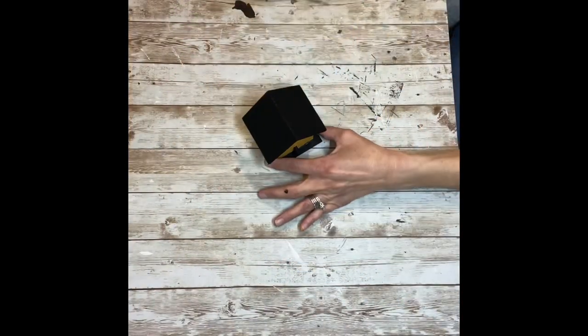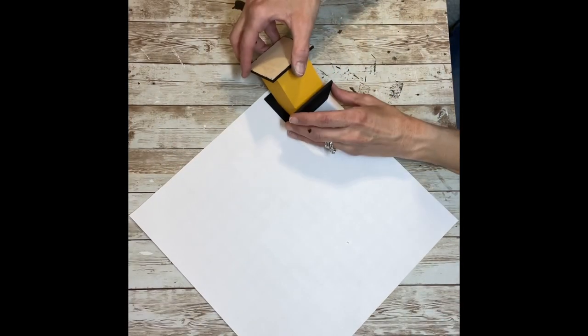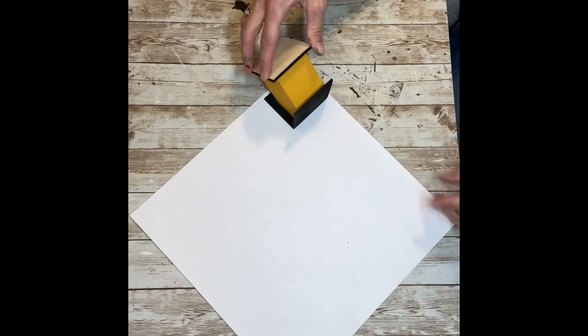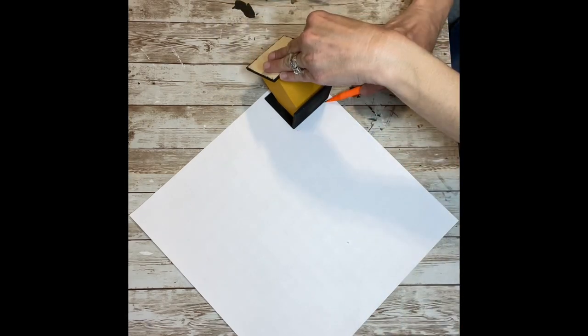Once that's all painted and dry, I'm going to lay the roof down on my scrapbook paper on one side and trace it out. Then I'm going to lay it on the other side and trace that out and cut both of those out.